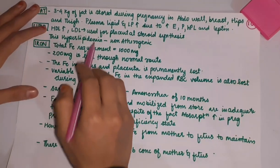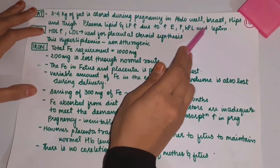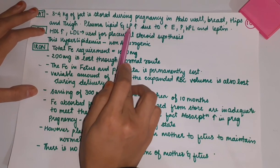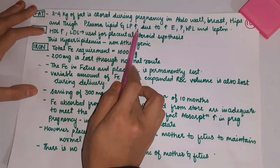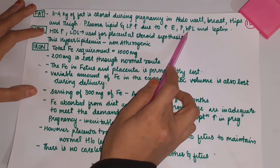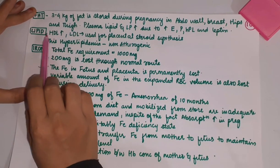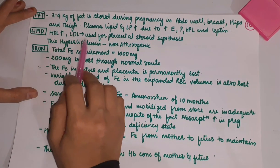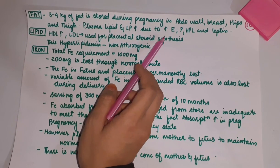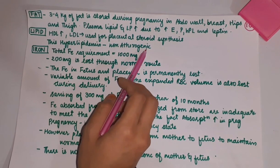Fat: 3–4 kg of fat is stored during pregnancy in the abdominal wall, breast, hips, and thighs. Plasma lipids and lipoproteins are increased due to increased estrogen, progesterone, human placental lactogen, and leptins. There occurs increased HDL and LDL, used for placental steroid synthesis. This hyperlipidemia is non-atherogenic.